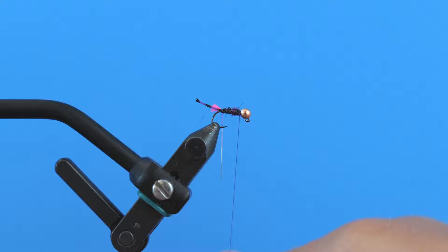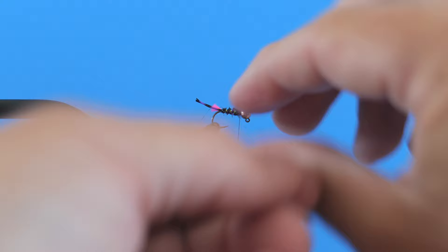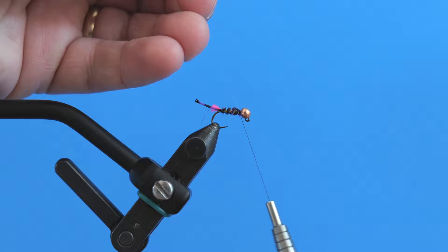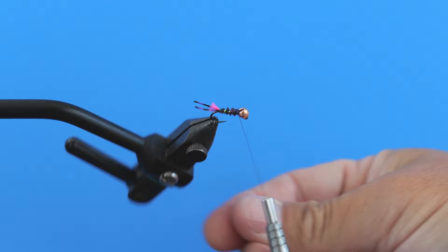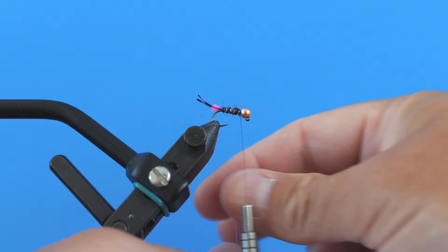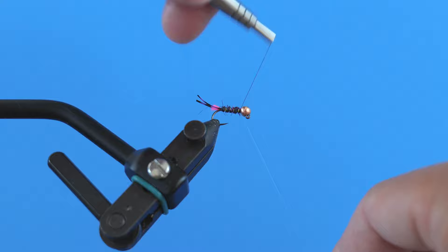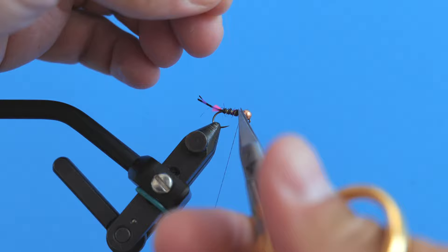Now I'm going to wrap my tinsel forward, just like that in one direction, capture it, trim it off. Then I'm going to take my monofilament and counter wrap that all the way back up. And that just helps with the durability of the fly. Just like that. Cut that off.